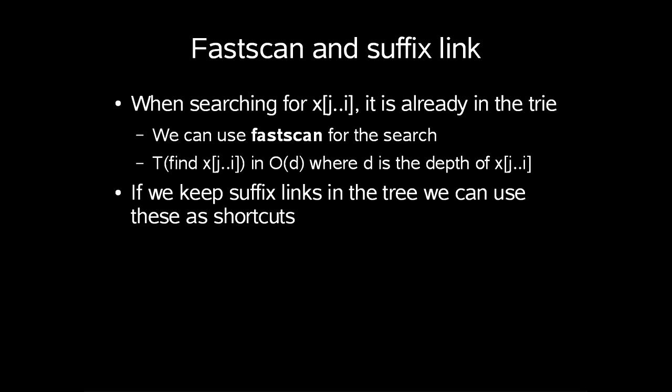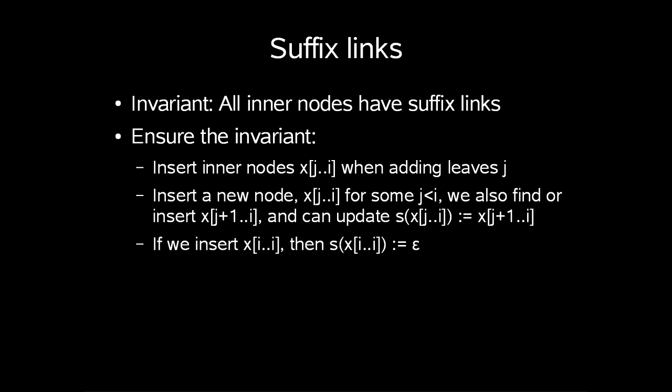What do we know about x[j..i]? Well, we know that it is already in our tree. So we can use fast scan for the search. So the time is order d, where d is the node depth of x[j..i]. Also, if we keep suffix links in the tree, we can use these as shortcuts. And our invariant tells us that all inner nodes have suffix links.